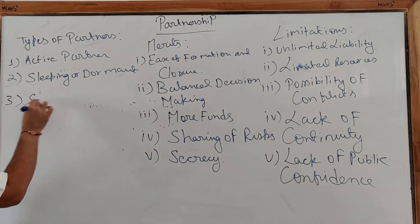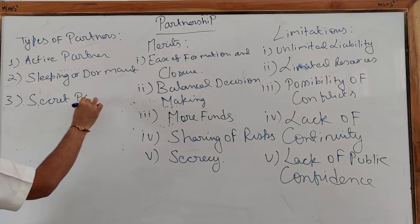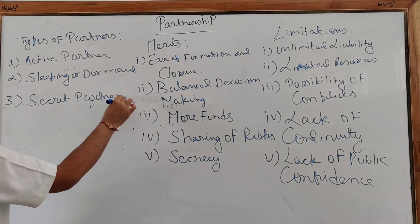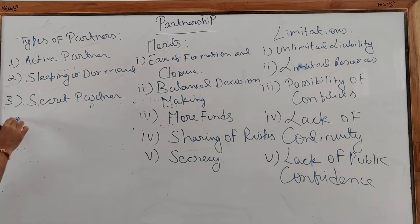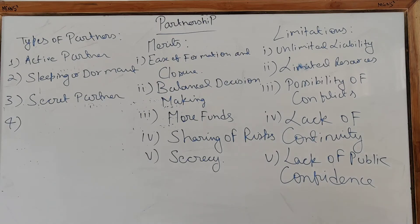Number 3 — Secret Partner: A secret partner is one whose identity is unknown to the public or to the firm. Like other partners, they contribute capital but may not participate in the day-to-day affairs of the firm — making them more or less similar to a sleeping or dormant partner.